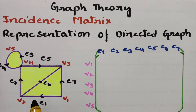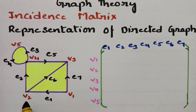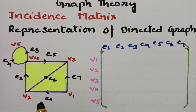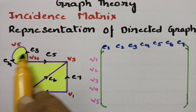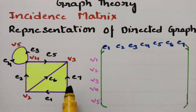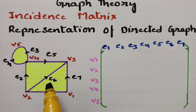Here is the graph. In this graph, first of all we have to check how many vertices and how many edges there are. We have v1, v2, v3, v4, v5 — five vertices. And the edges are e1, e2, e3, e4, e5, e6, e7 — seven edges. Edges means lines and vertices means dots.